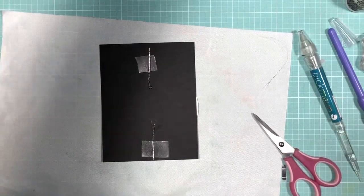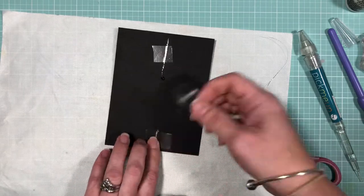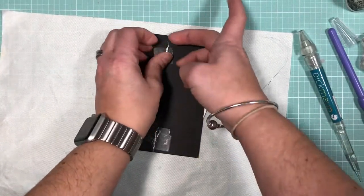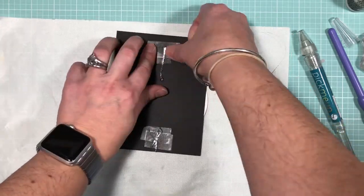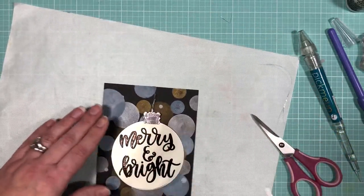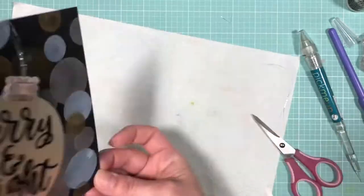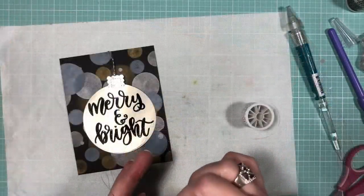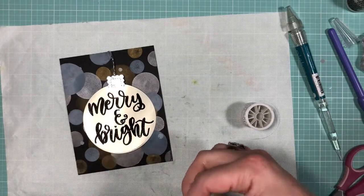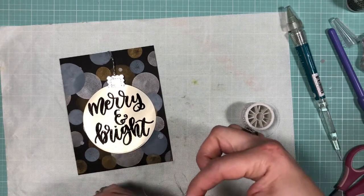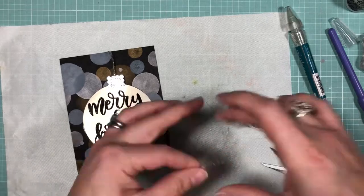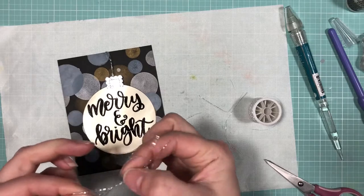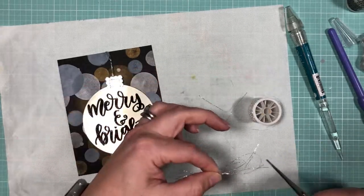To keep my thread from accidentally pulling through the front, I'm just going to bend back the thread and add another piece of tape to secure the ends.